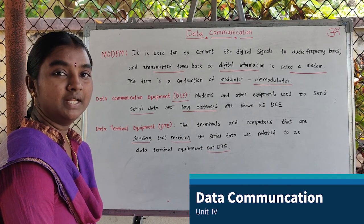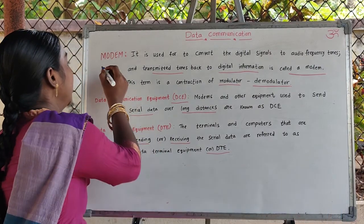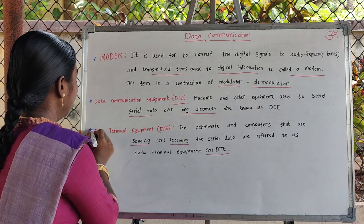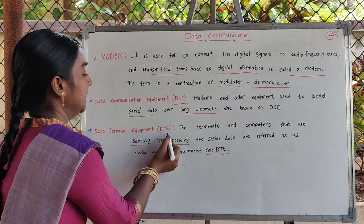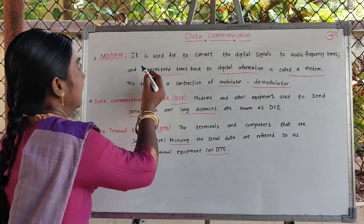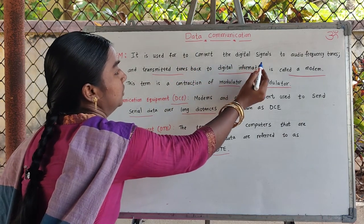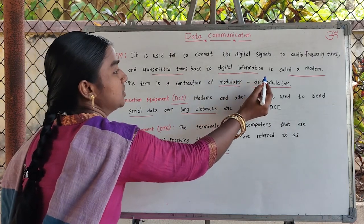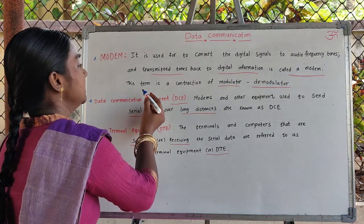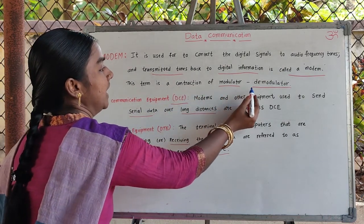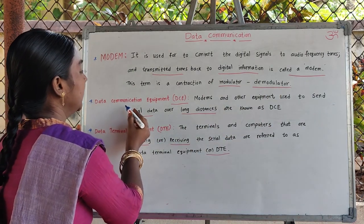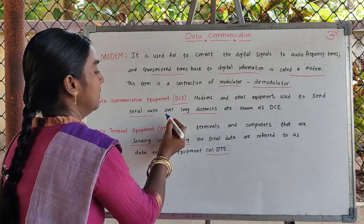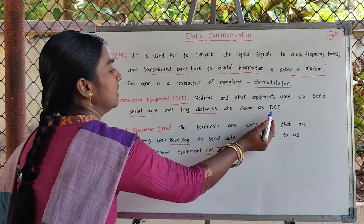In data communication, we frequently use terms like modem, data communication equipment (DCE), and data terminal equipment (DTE). A modem is used to convert digital signals to audio frequency tones and convert transmitted tones back to digital information. This term is a contraction of modulator and demodulator. Data communication equipment means modems and other equipment used to send serial data over long distances.